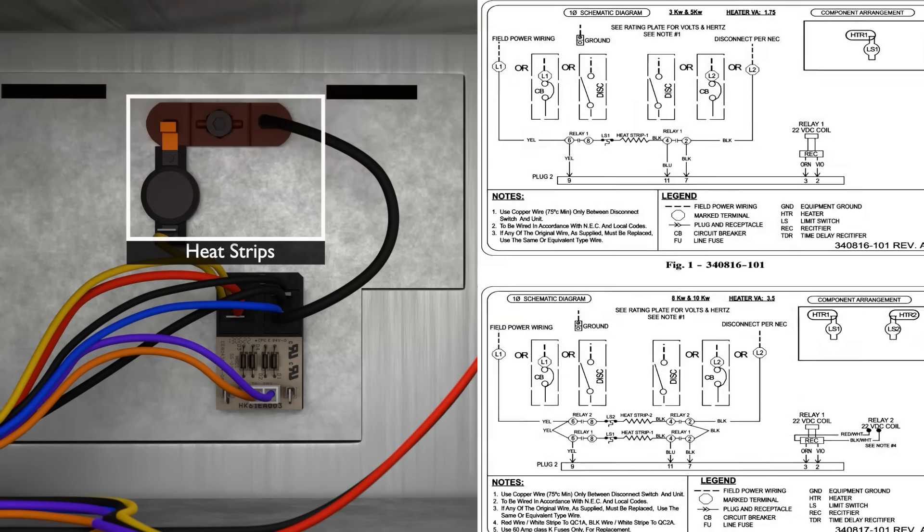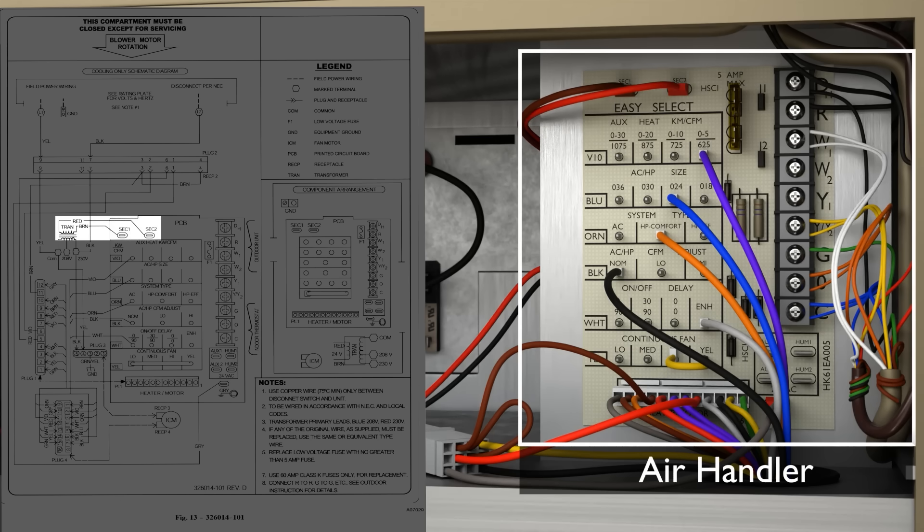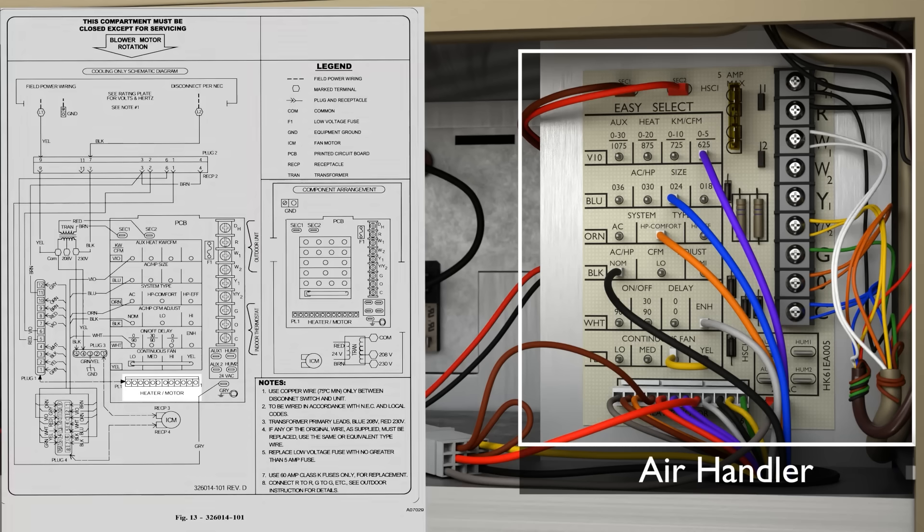Next, we show our integrated circuit board for our air handler. You can see our 24-volt power coming into the top at SEC1 and SEC2 from the transformer. Our 5-amp fuse and our terminal block for our low-voltage connections, as well as the plug that goes to the heater and motor.